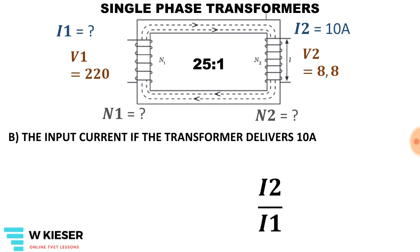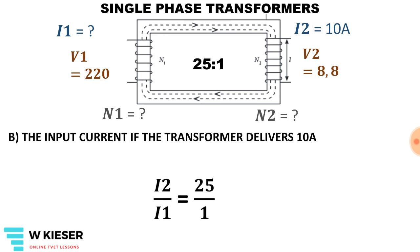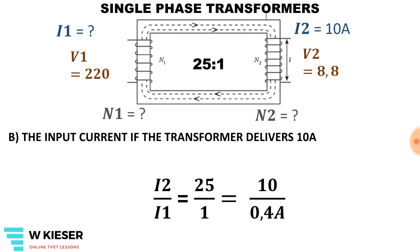To calculate the input current when the transformer delivers 10 amps to the secondary side, we use the equation I2 over I1, with the ratio staying the same at 25 on the primary and 1 on the secondary. If we are delivering 10 amps to the secondary side, using cross multiplication, the primary current is 0.4 amps.